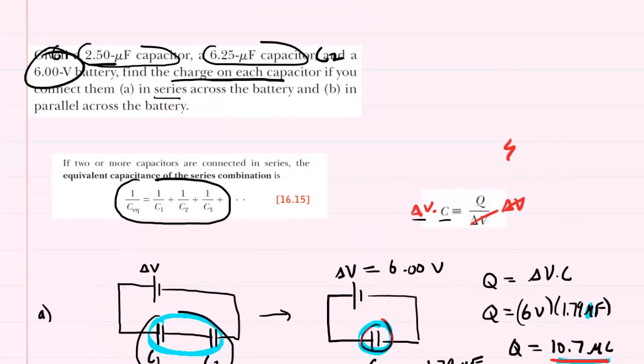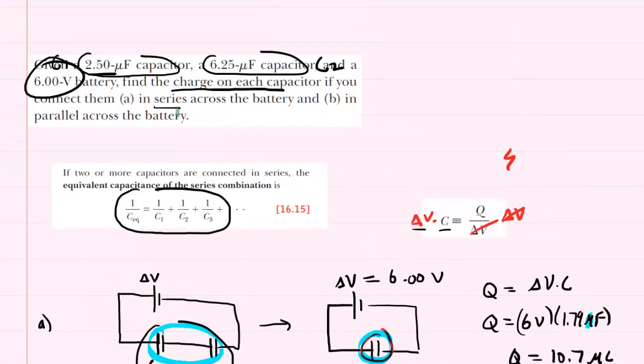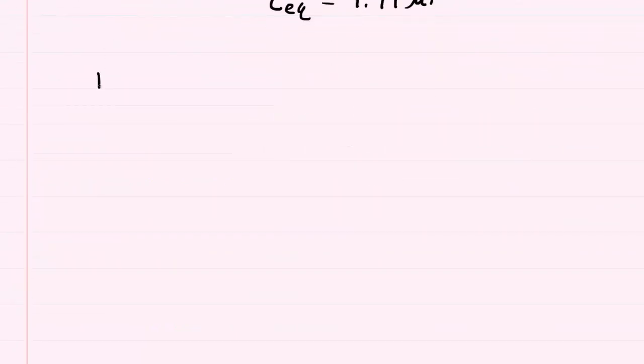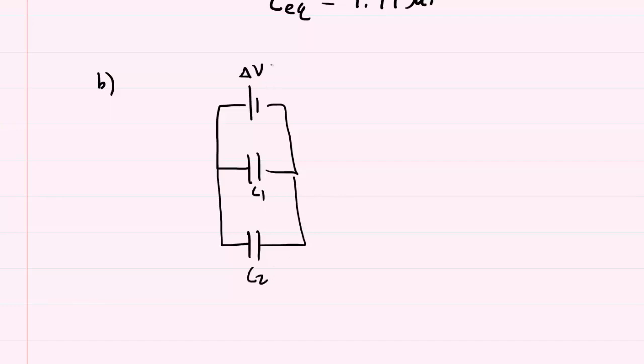Moving on to part B, which will turn out to be a little bit more straightforward, this time we're going to connect the capacitors in a parallel combination. So if they're connected in a parallel combination, we'll still have the battery that we can mark delta V, but this time the capacitors will be connected in the following manner. And again, we might call this one C1 and this one C2.